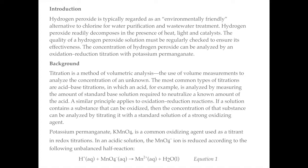The concentration of hydrogen peroxide can be analyzed by an oxidation-reduction titration with potassium permanganate. That is the goal of this lab: to determine the concentration of the hydrogen peroxide sample.